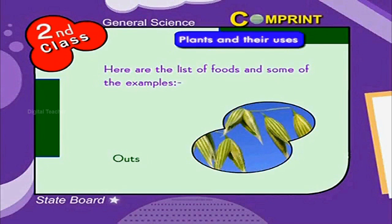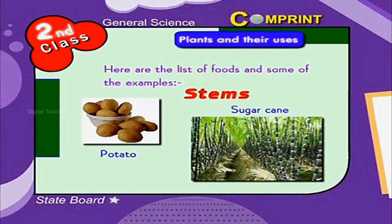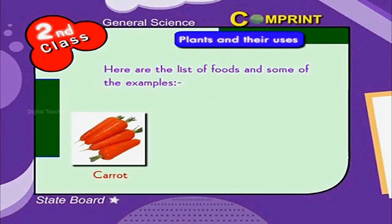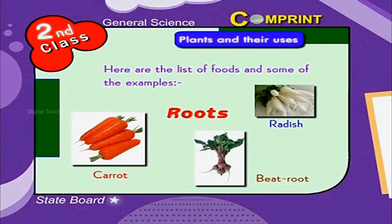We get vegetables from different parts of the plants. Potato and sugar cane are from stems. Carrot, radish, beetroot, etc. are from the roots of the plants.